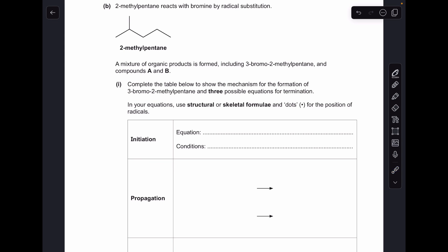So starting with initiation, that's when the bromine molecule is broken by homolytic fission. So we take a bromine molecule and we turn it into two bromine radicals and the condition for that is UV.